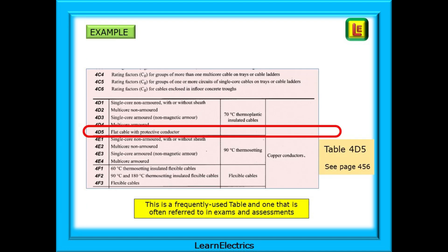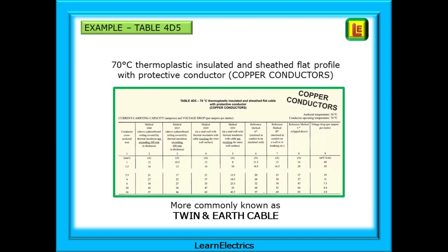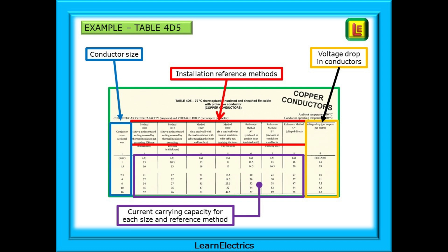Take Table 4D5 as an example. This is a frequently used table and one that is often referred to in exams and assessments. This table is listed at the top of page 575 in Table of Tables and directs us to page 456. The title of this table is 70 degrees Celsius thermoplastic insulated and sheathed flat profile with protective conductor, copper conductors, and more commonly known as twin and earth cable. If you're working in domestic properties, you may be referring to this table all the time.